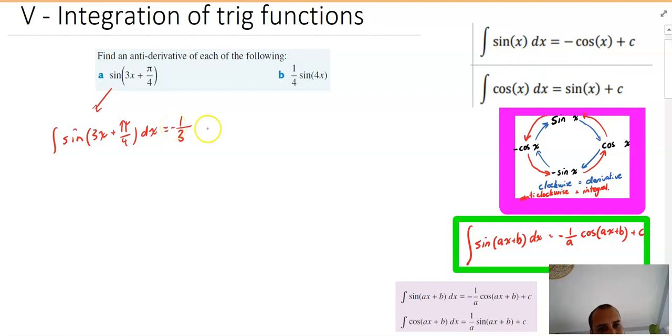It's going to be negative so I need a negative out the front, and it's going to become cos, and then that ax plus b just stays exactly how it is, and then we need a plus c on the end. All right so no real tricks, this should be feeling very very repetitive at this point.